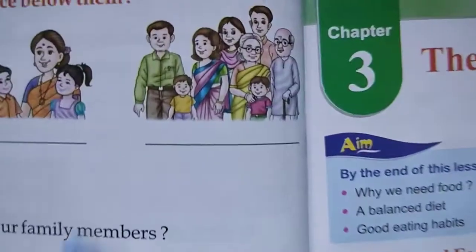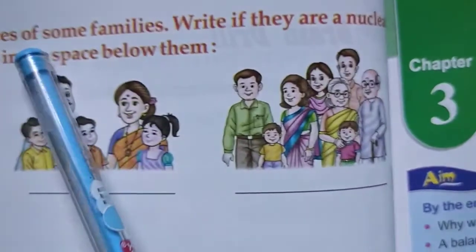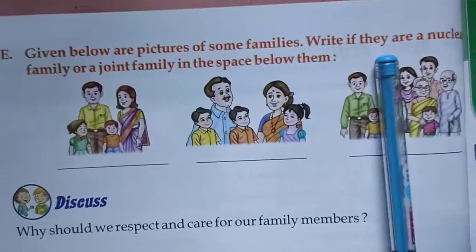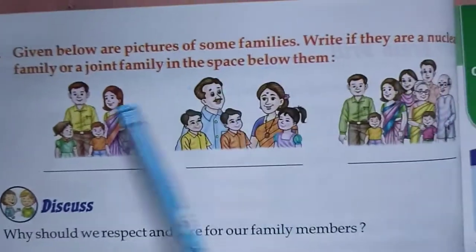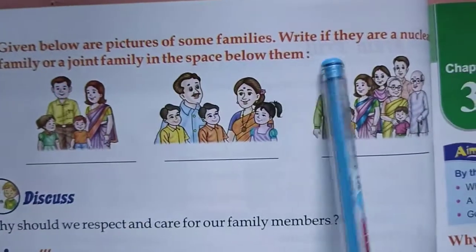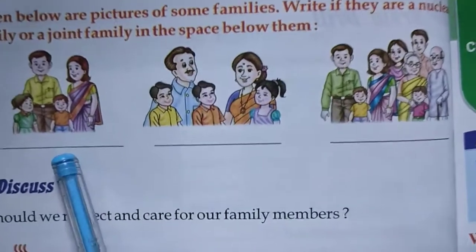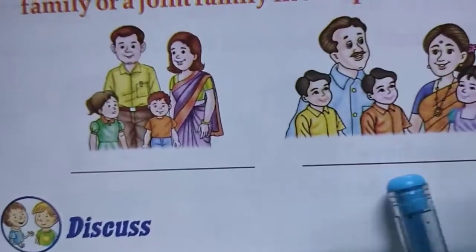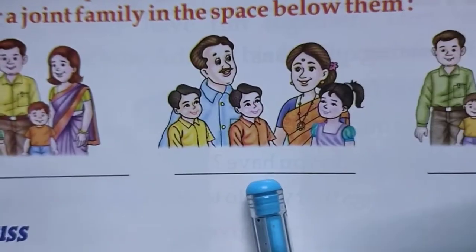Given below are pictures of some families. Write if they are a nuclear family or joint family. This is a small nuclear family, this is a big nuclear family, and this is a joint family.